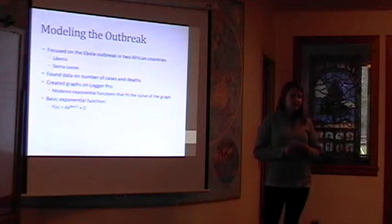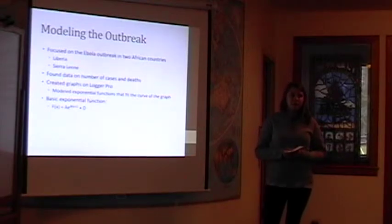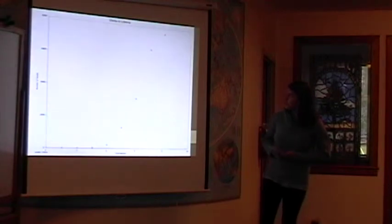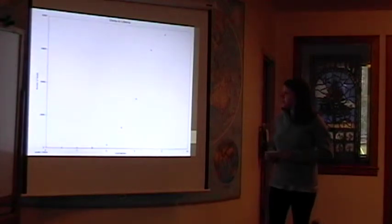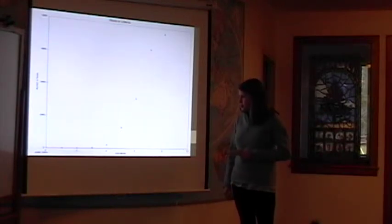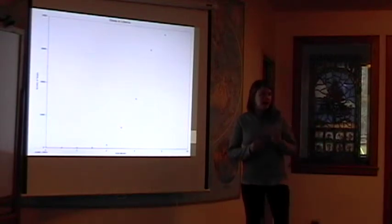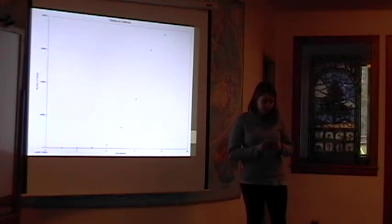I looked at the number of cases and the number of deaths in those two West African countries. My goal was to figure out what mathematical principles could describe the spread of a disease or epidemic like Ebola and how I could look at the future of the outbreak and see how it would progress through time. I used Logger Pro to create a series of graphs that will represent this data. So the first thing I did was plot the number of people infected with Ebola per month in Liberia. This starts at the beginning of the outbreak in March 2014 and goes up until the present day. The first thing I noticed was that this looked like exponential growth, so I thought that I could use a natural exponential function to model the growth of this disease.